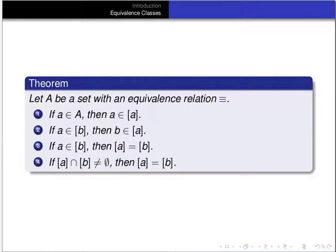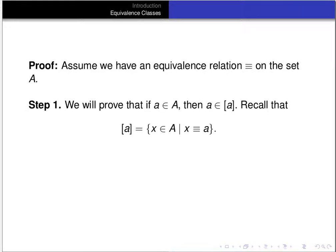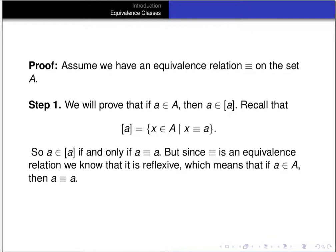Let's prove this theorem. Assume we have an equivalence relation on the set A. For step one, we prove that for any element A in A, A is in its own equivalence class. The equivalence class of A is the set of all X in A such that X is related to A. To say A is in its own equivalence class means A is related to A. But since this is an equivalence relation, it's reflexive, meaning for any A in the set, A is indeed related to A. So A is an element of its own equivalence class — this relies on reflexivity.